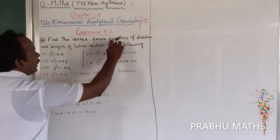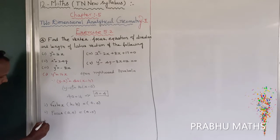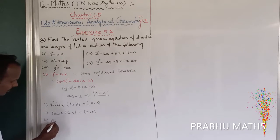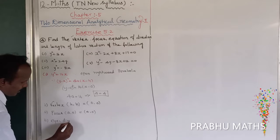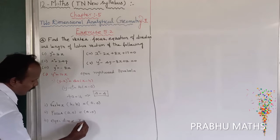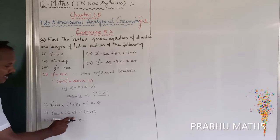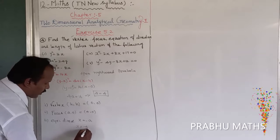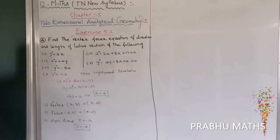Third, find the equation of the directrix. The equation of the directrix is x equal to minus a, which gives x equal to minus 4. That is the answer for the directrix.